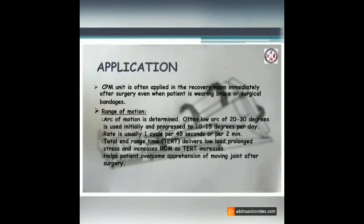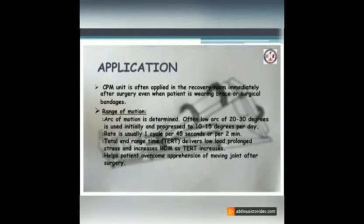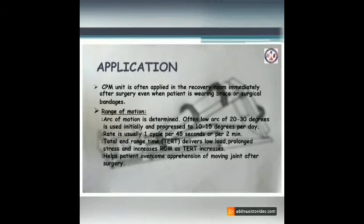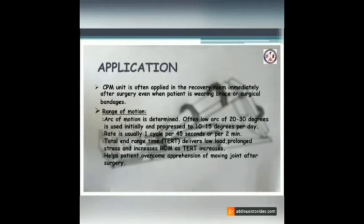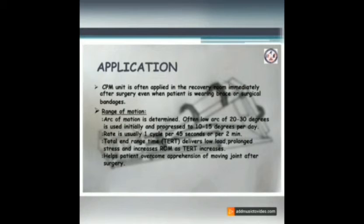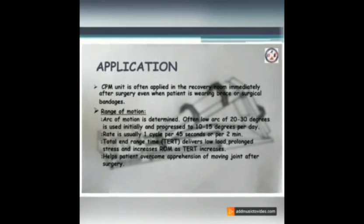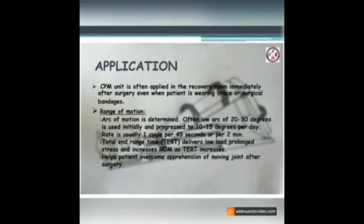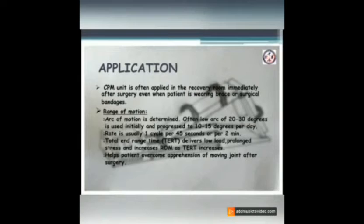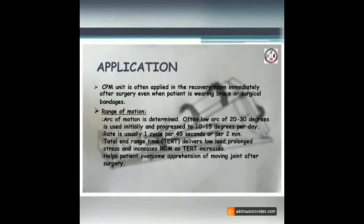Specifications: CPM units are often applied in the recovery room immediately after surgery, even when patients are wearing braces or surgical bandages. The arc of motion is typically 20 to 30 degrees initially, progressing 10 to 15 degrees per day. Rate is usually one cycle per second or per two minutes.